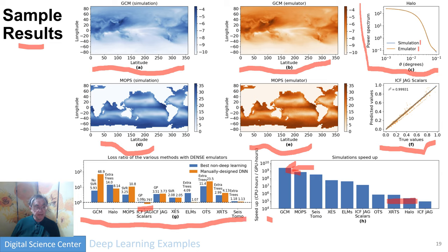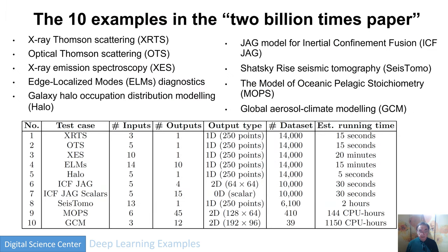They will get substantial speedups once the number of lookups gets above 39. The next slides give more detail on the actual applications: the number of data points in the training set ranged from 39 for climate to 14,000 for simpler cases. Applications include galaxy modeling, ocean, seismic, fusion, climate with aerosol, and ocean model simulations — and they all work pretty well. This is bound to get a lot more attention.